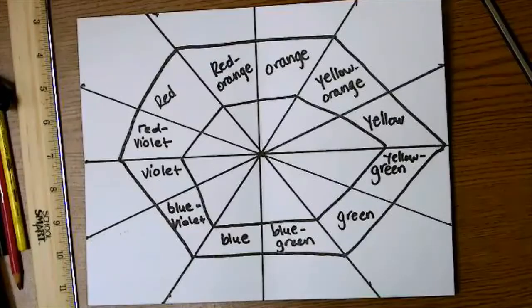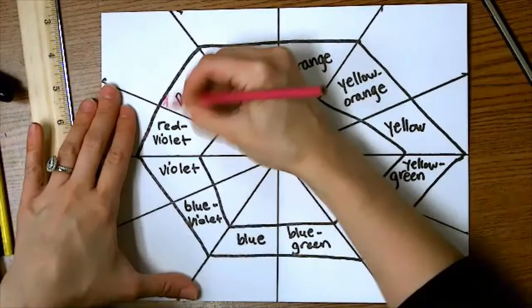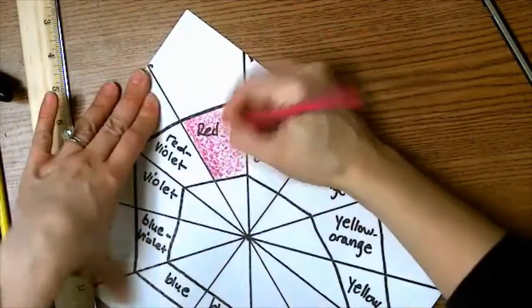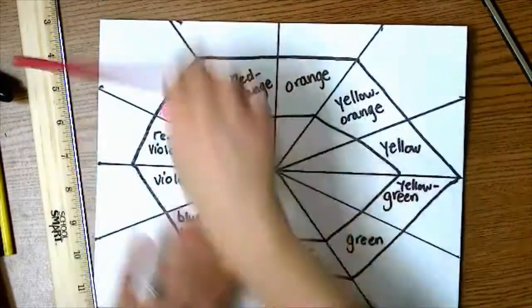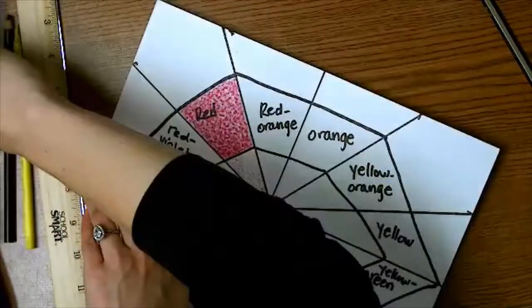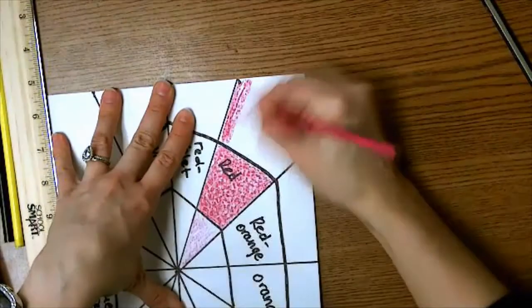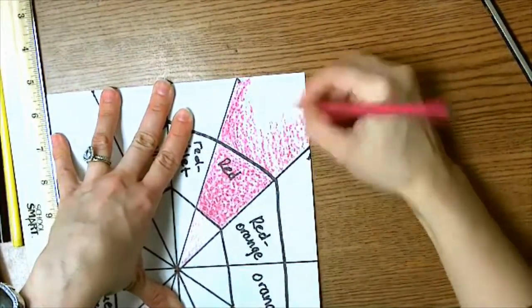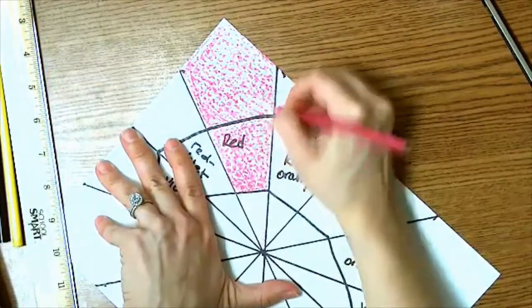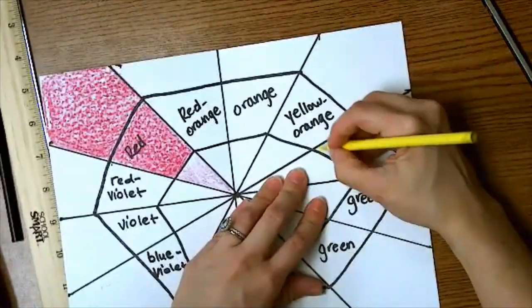All right, welcome back. Today we're going to be painting that color wheel that we started drawing in the last section. So we're using watercolor colored pencils today, and if you've never used these before, they're really cool. Basically it works like a regular colored pencil and you just color in the space that you want to be that color and you layer the colors over one another.